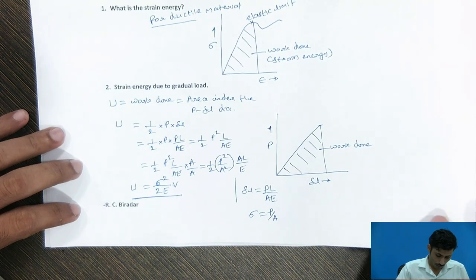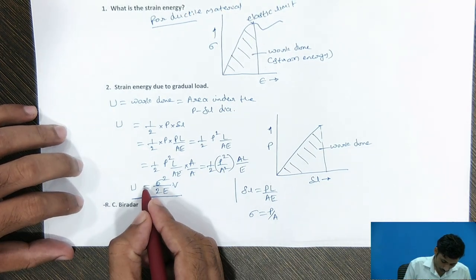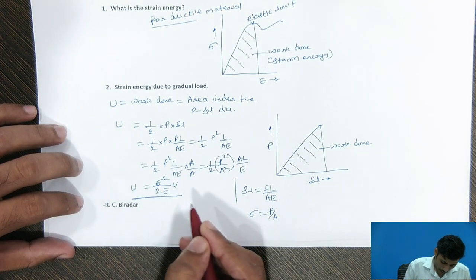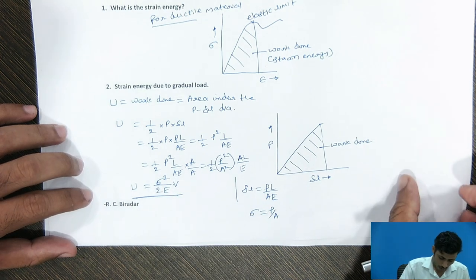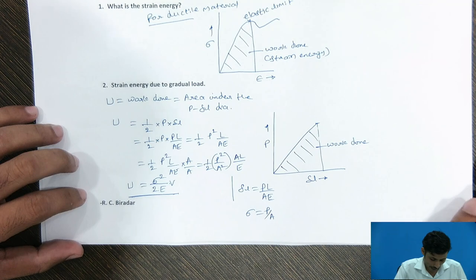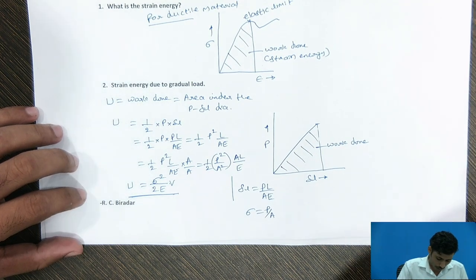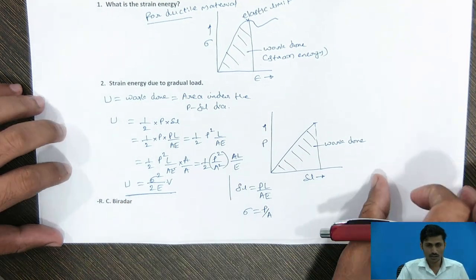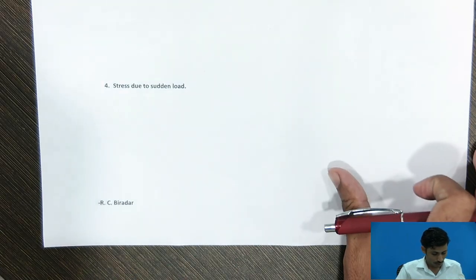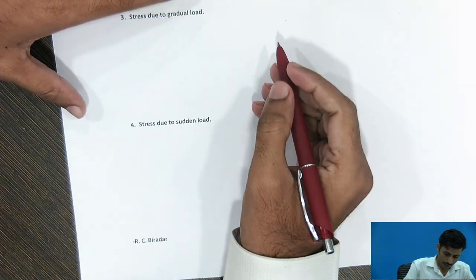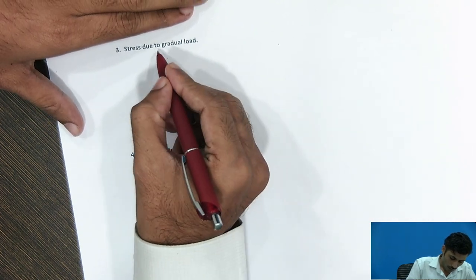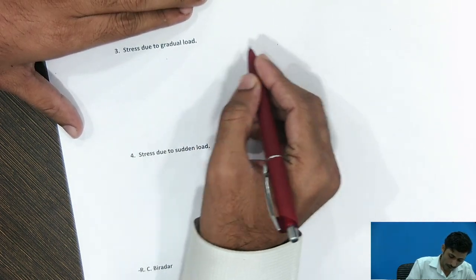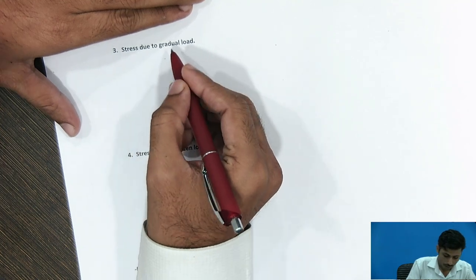Now, the strain energy equation contains the stress value. And this stress value is different for gradual load, sudden load and impact type of load. So, in order to find the strain energy for all the three type of loading conditions. So, we can get the strain energy for different loads. Now, to find the stress due to gradual load.